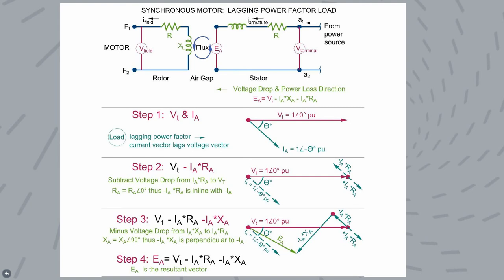And also in step one, we find out that our armature current lags the voltage phasor by the power factor angle. So this is the same in our problem where we have a lagging power factor of 0.75.